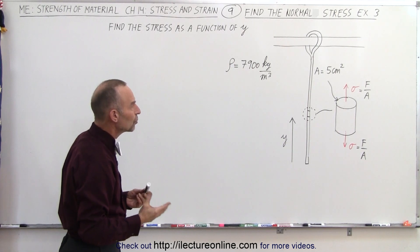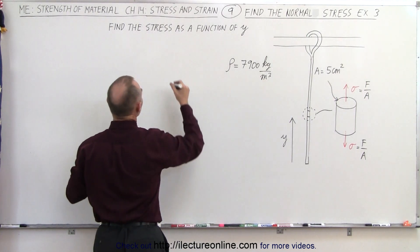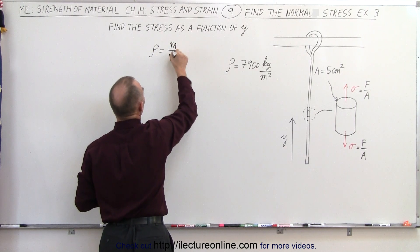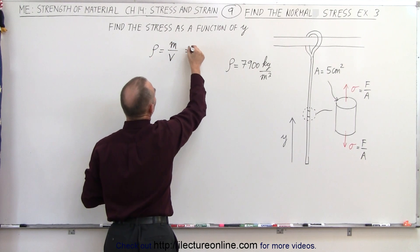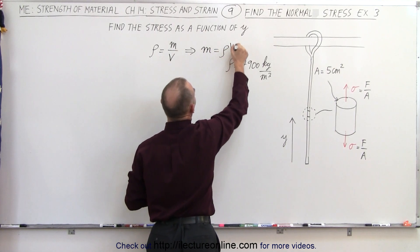First, using density, we can say that density by definition is equal to mass divided by volume, which means that the mass of any segment of the cable is equal to the density times the volume.